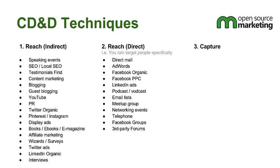Testimonials First is a technique that Jordan and Sarah have developed, which is really, really good. Content marketing obviously is an element of SEO — blogging, guest blogging, YouTube marketing, because it's kind of faceless. General PR, which is also what SEO wants to be when it grows up. Twitter organic marketing, Pinterest, Instagram, display ads, all your books and publications — because you don't know the individual who's going to be reading it. Affiliate marketing, wizards and surveys like the one Rob's just done that we emailed out today. Twitter ads, LinkedIn organic marketing — which is an area of Brian's expertise — and interviews, which is more of a technique really.